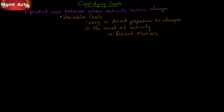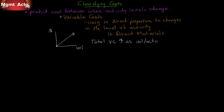A good example is direct materials. Every time we make something new, we need more material, so it varies in direct proportion with what we make. On a chart with dollars on the vertical axis and activity on the horizontal, variable cost is a line that intersects at 0,0 — because if we make nothing, it costs us nothing. Total variable costs increase as volume increases, but the variable cost per unit is constant. Every time we add a unit, we add the same cost, so our total cost goes up but the variable cost per unit remains constant.